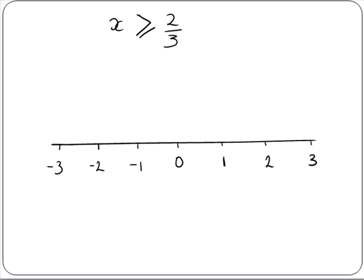So now we graph our solution. So we start at 2 thirds. So 2 thirds is about here. We use a filled in circle to show us that 2 thirds is in the solution. So we fill in a circle here on 2 thirds.